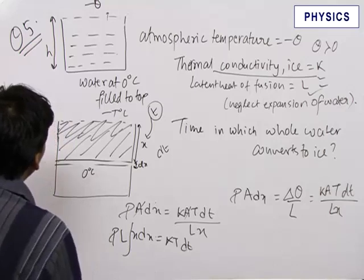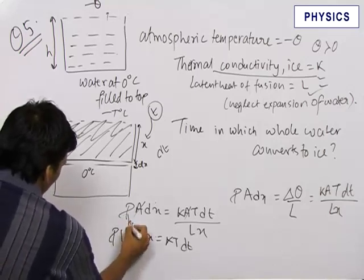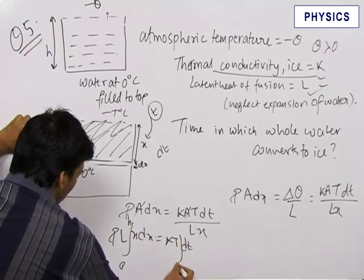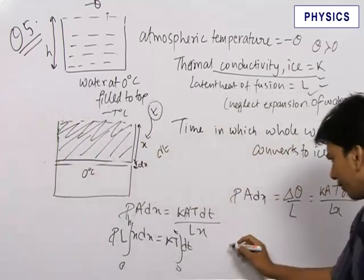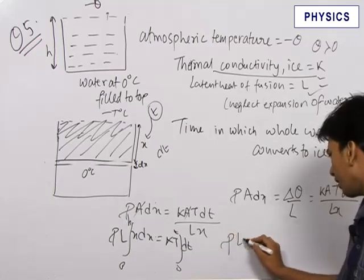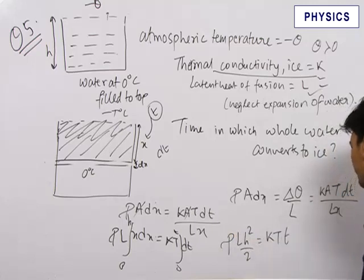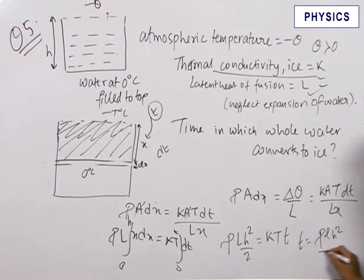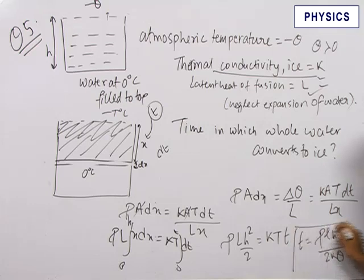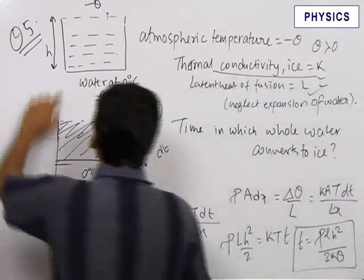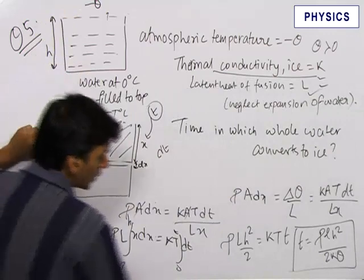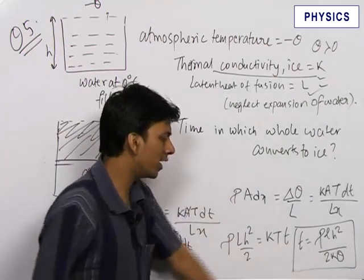Equating rho·A·dx = k·A·t·dt/(L·x), the area A cancels and we get rho·L·x·dx = k·t·dt. Integrating this with x from 0 to h and t from 0 to T, we get rho·L·h²/2 = k·t·T. Therefore T = rho·L·h² / (2·k·t), and since t represents theta, the final answer is T = rho·L·h² / (2·k·theta).